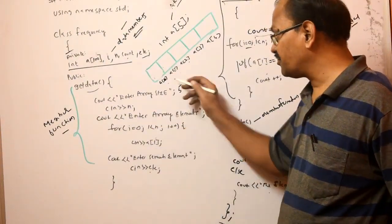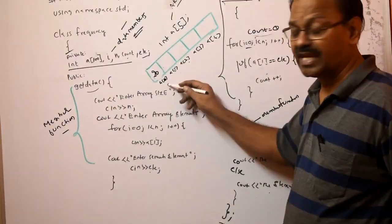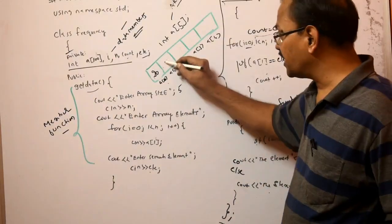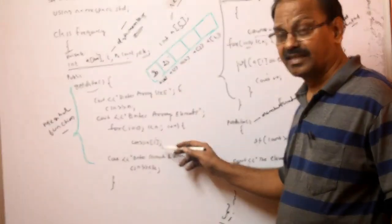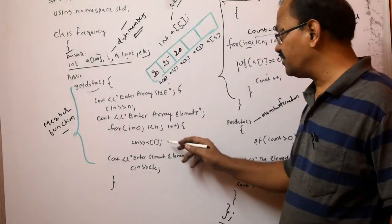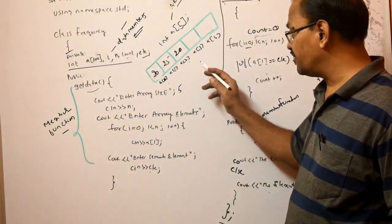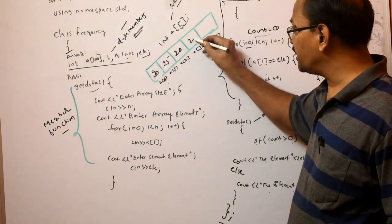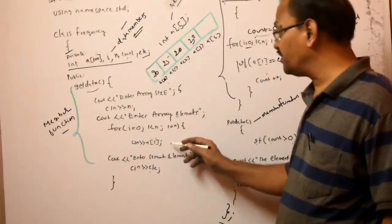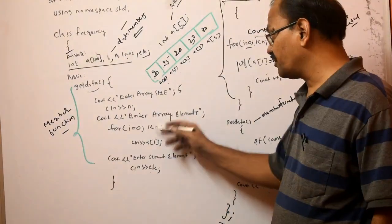The array size is 5 and it will create an array with 5 memory locations starting at 0 and ending at 4. Now we have to enter the array elements using a for loop: for i=0; i<n; i++. First time A[0] will be there — when I input, I enter 20, which is stored in A[0]. Then i becomes 1, condition is true, I enter 25 stored in A[1]. i becomes 2, I enter 20 stored in A[2]. i becomes 3, I enter 30. i becomes 4, I enter another 20. When i becomes 5, 5<5 is false and it exits the for loop.